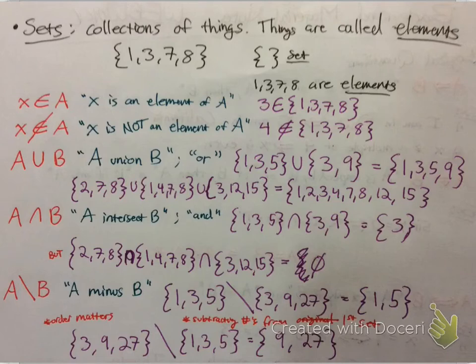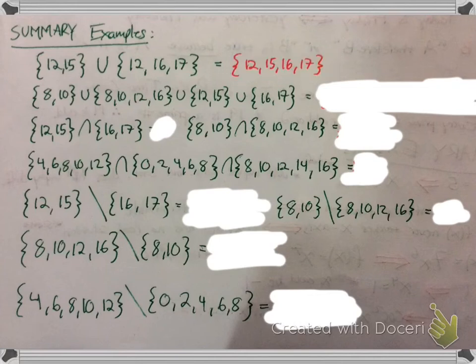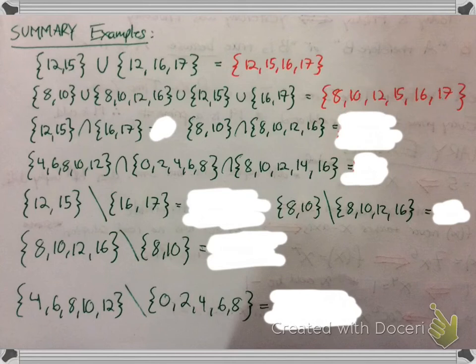Okay, now we're going to do a few examples. If you feel like you got it, hang on for the examples and test your knowledge. So A union B — pretty much everything they have combined — write down every number without duplicating, and you would get this. The next one is the union of all those sets — same concept, list every single number but don't duplicate, and you'd get this set here.